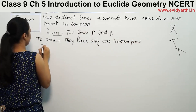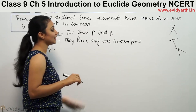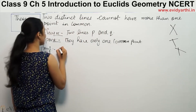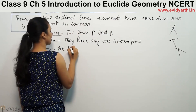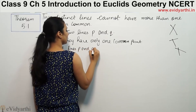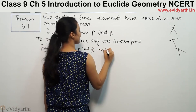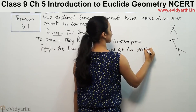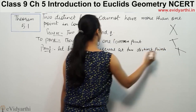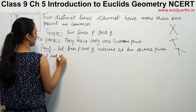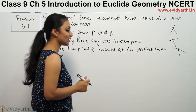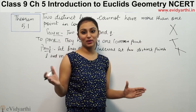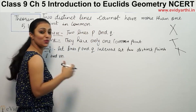Proof. Now let's say two lines — two different lines — intersect. Let lines P and Q intersect at two distinct points L and M. So this means that we have two distinct points, and these lines are passing through two distinct points.